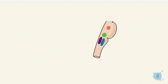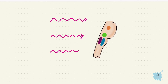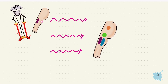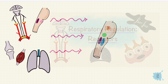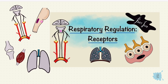The respiratory centers make these decisions based on information received from receptors, such as the central and peripheral chemoreceptors, proprioceptors, stretch receptors, and others. Make sure you check out the video on these receptors in part 2 of regulation of respiration.